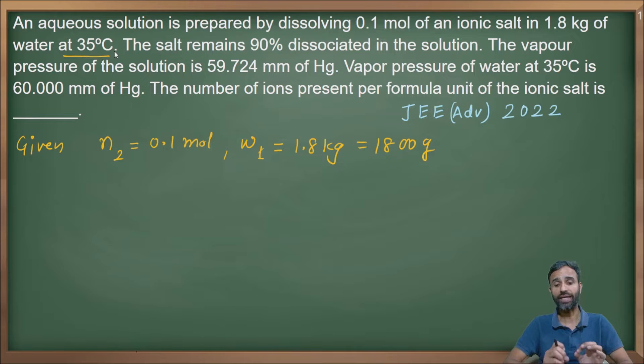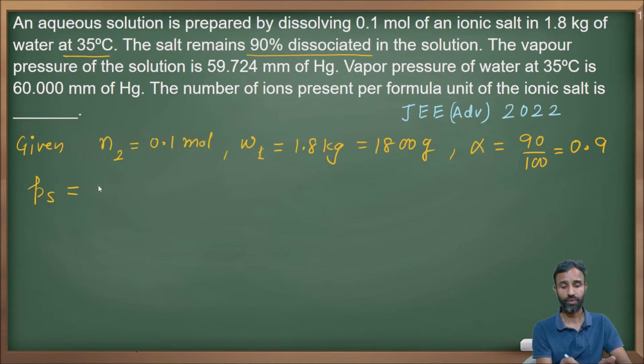The salt remains 90% dissociated in the solution, meaning α = 0.9. The vapor pressure of the solution is Ps = 59.724 mm of Hg. Vapor pressure of pure water is P₁⁰ = 60 mm of Hg.